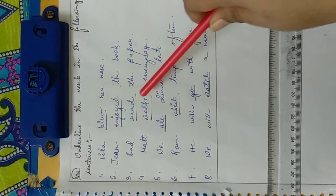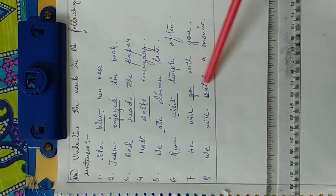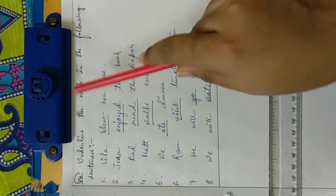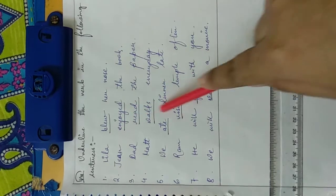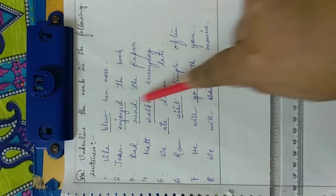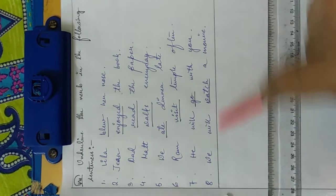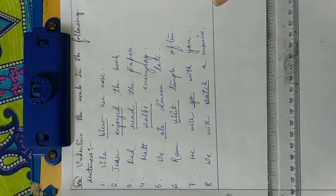So blue, enjoyed, read, walks, ate, visit, go, watch. All these are verbs. So here it is already given. You have to underline the verbs. So here are also eight sentences. Copy it down. Freshly draw an ending line after each topic.